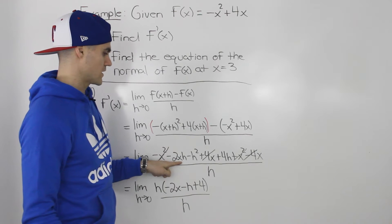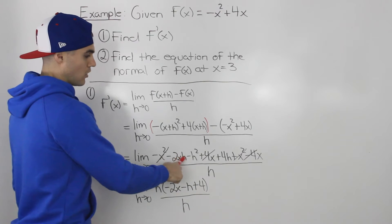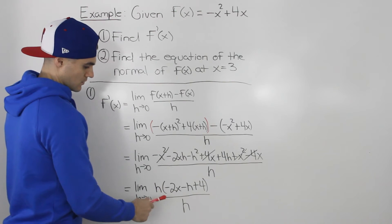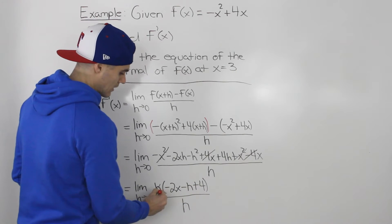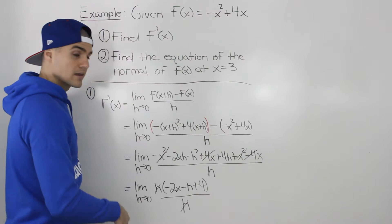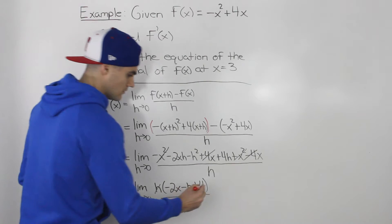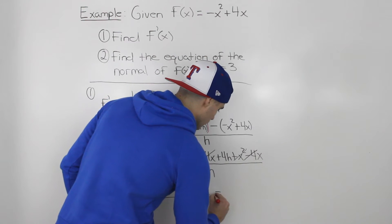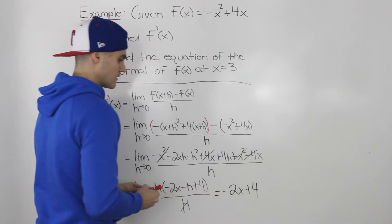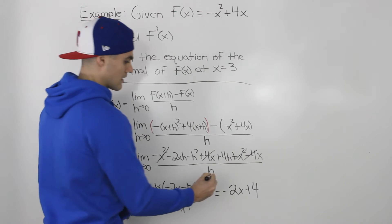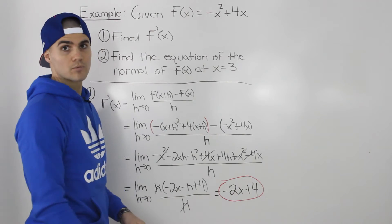What's remaining is -2xh - h² + 4h. We can factor out an h from all three terms, leaving us with h times (-2x - h + 4). The h's cancel out, and now we can plug in 0 for h. The only remaining h goes to 0, and we're left with -2x + 4. So -2x + 4 is the derivative of -x² + 4x.